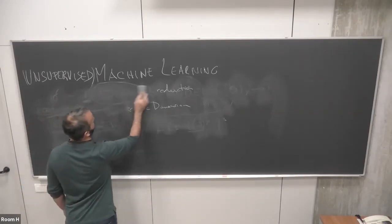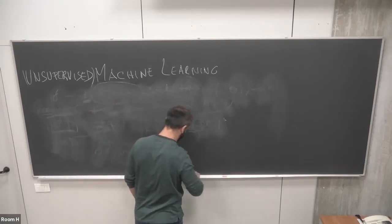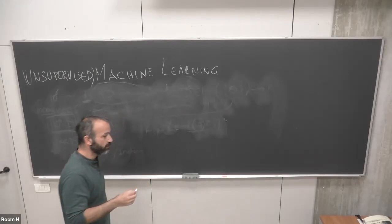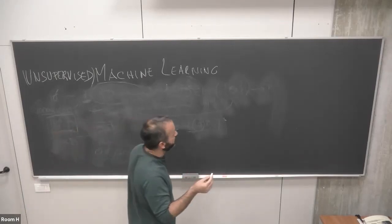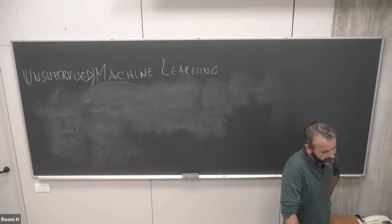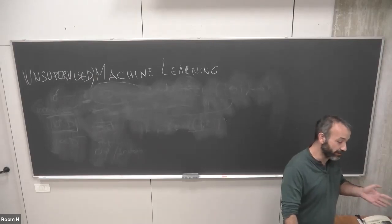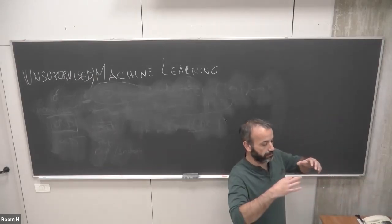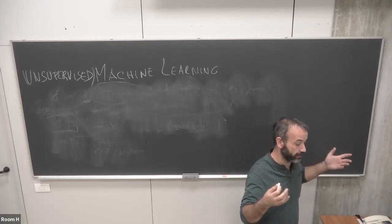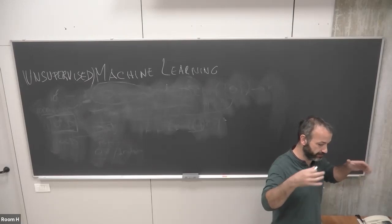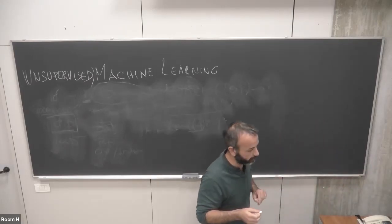Now that I've introduced unsupervised machine learning, there is a question: when you say manifold, do you mean it in the geometrical sense — a differentiable geometric manifold? In this context, yes, you can think of it in the geometric sense, but we are restricted to our sample — we only have our data points, not points in between. The idea is roughly that.